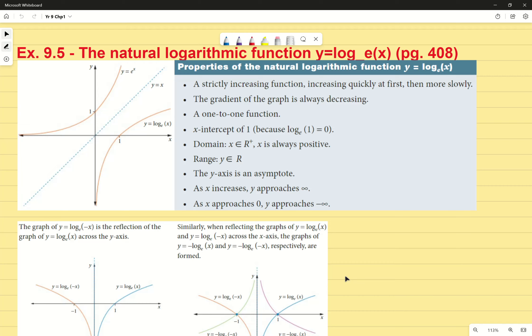So our original function is y equals e to the power of x, and we reflect it. It's reflected as with all inverse functions across the y equals x line, which means we have a function that looks like this. It's strictly increasing, increasing quickly at first and then more slowly. It's still positive, still strictly increasing, but more slow.